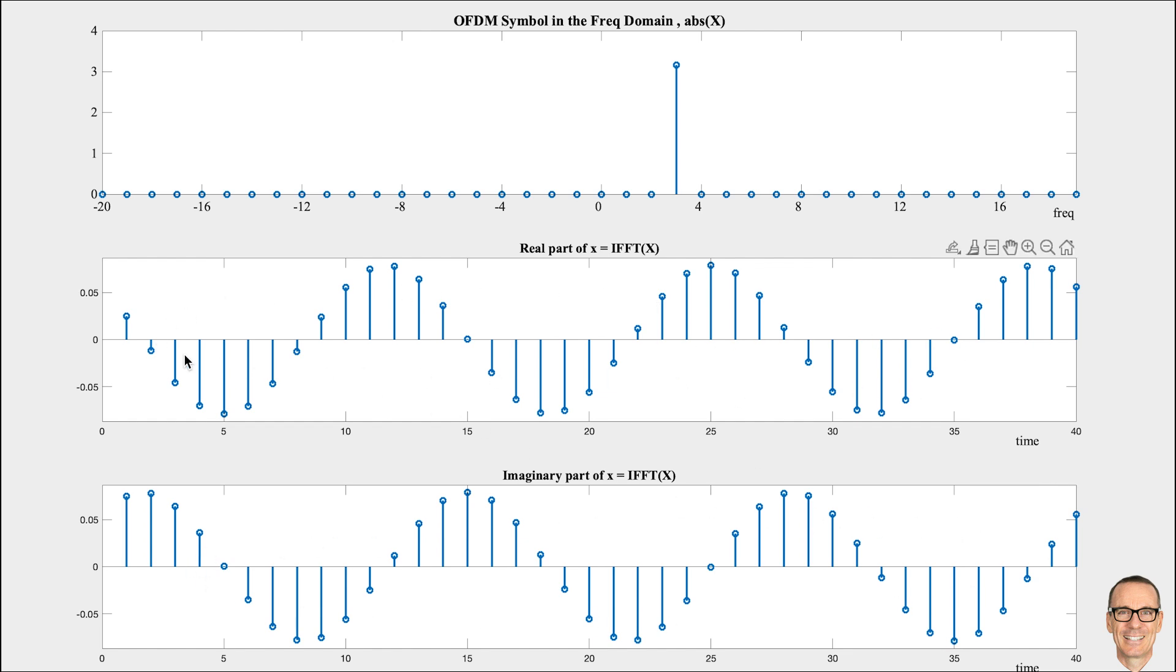They are both real signals being transmitted over the channel. They are transmitted in an orthogonal way, because one is with cos and the other is with sine, but importantly, they are both real signals. Now, let's think about the frequency components of these signals.